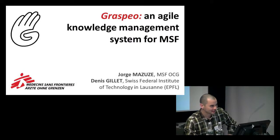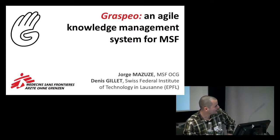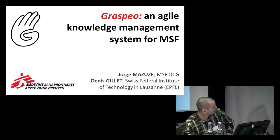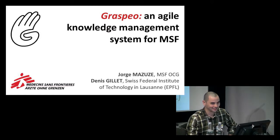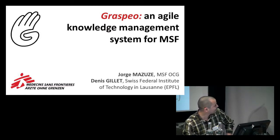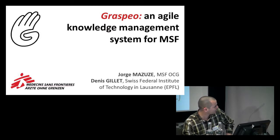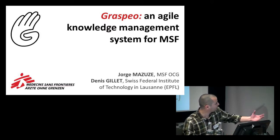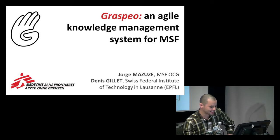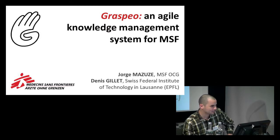I would like to welcome our last demonstrator, George Massouz, who has been working for MSF for 20 years. Currently he's working with something very interesting that perhaps will answer one of the questions from earlier — how to know what everybody's working on. George is working with Graspio, an agile knowledge management system for MSF.